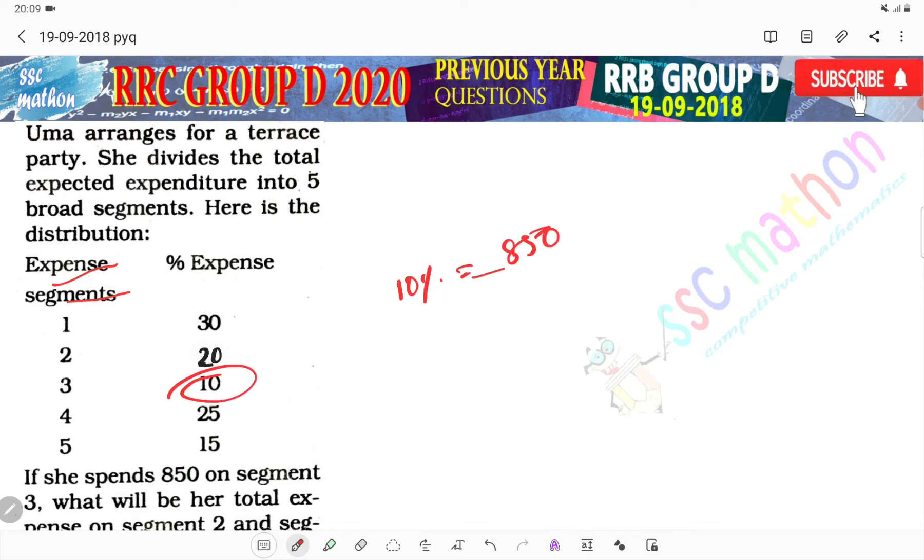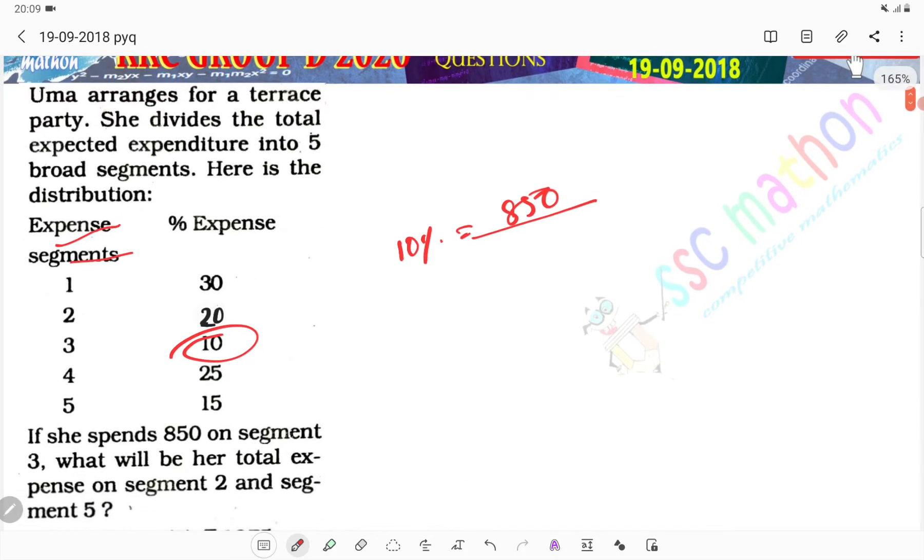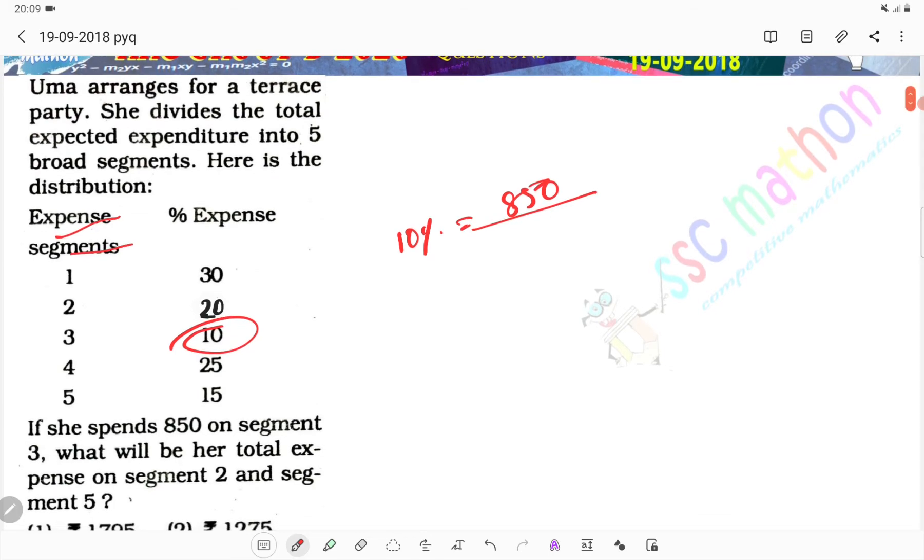What will be the expenses on segment 2 and segment 5? So segment 2 and segment 5, what expenses will be?